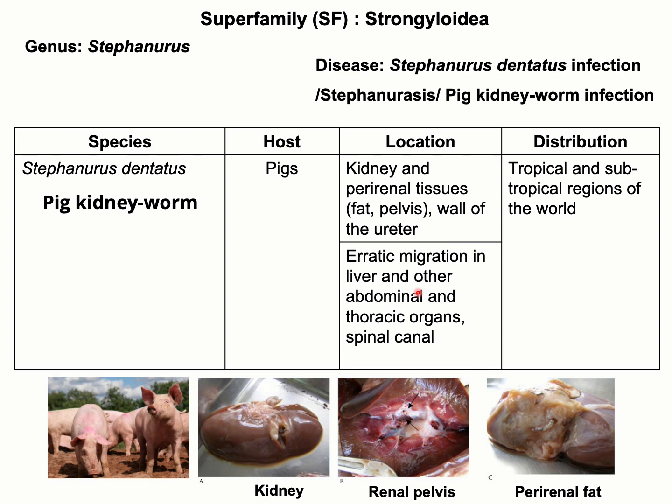Larval stages may even be found in the spinal cord of the host, therefore they are also known as erratic or aberrant parasites. The distribution of this parasite is in tropical and subtropical regions of the world. The disease caused by this parasite is also known as Stefanurus dentatus infection, stefanuriasis, or pig kidney worm infection.